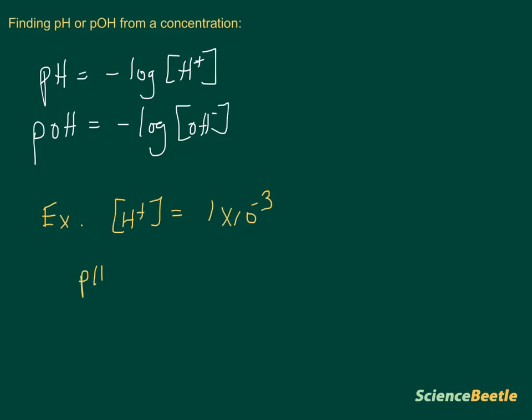We would use pH is equal to the negative log and then we're going to take the negative log of the concentration of the hydrogen ion, which in this case is given to us, 1 times 10 to the negative 3. And if we do that, we're going to find that the actual answer here is going to be 3. So our pH would be 3.